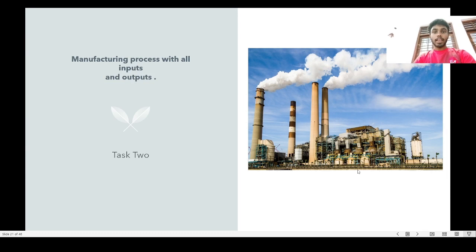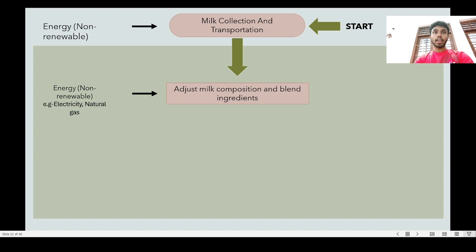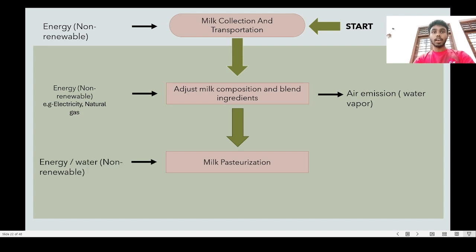I am Manzha Sandi and I will be explaining the manufacturing process of yogurt production. Collecting milk from farms and transporting it to the factories is the first step; energy sources used here are non-renewable. To increase the quality and taste of the yogurt, adjusting milk composition and blending ingredients is the second step; energy sources used are non-renewable such as electricity and natural gas, and air emissions occur as output. Milk pasteurization is the third step; in addition to non-renewable energy, water is also used, and air emissions occur as output.